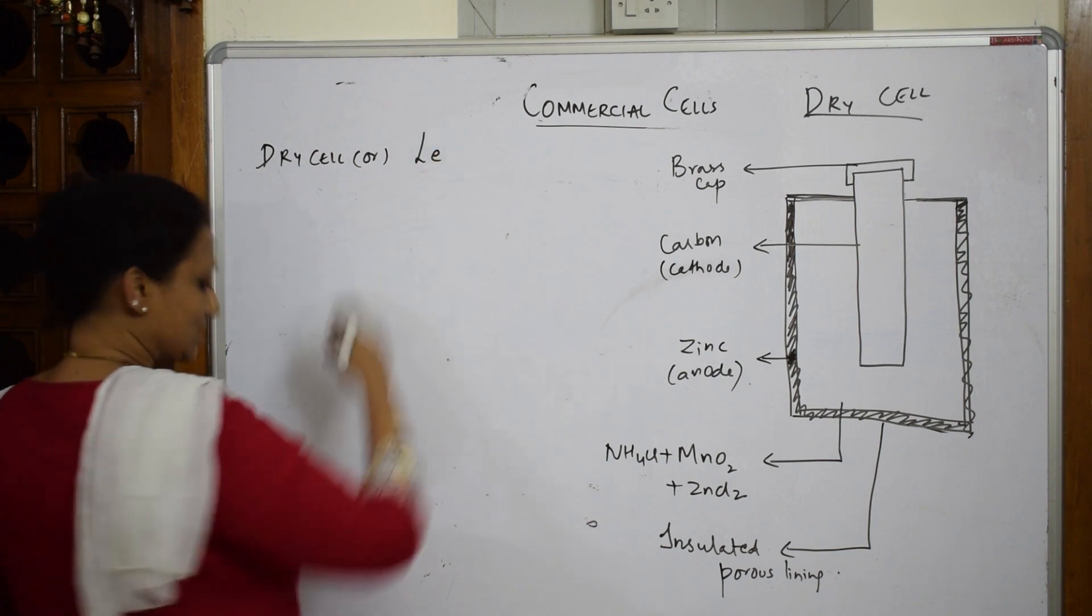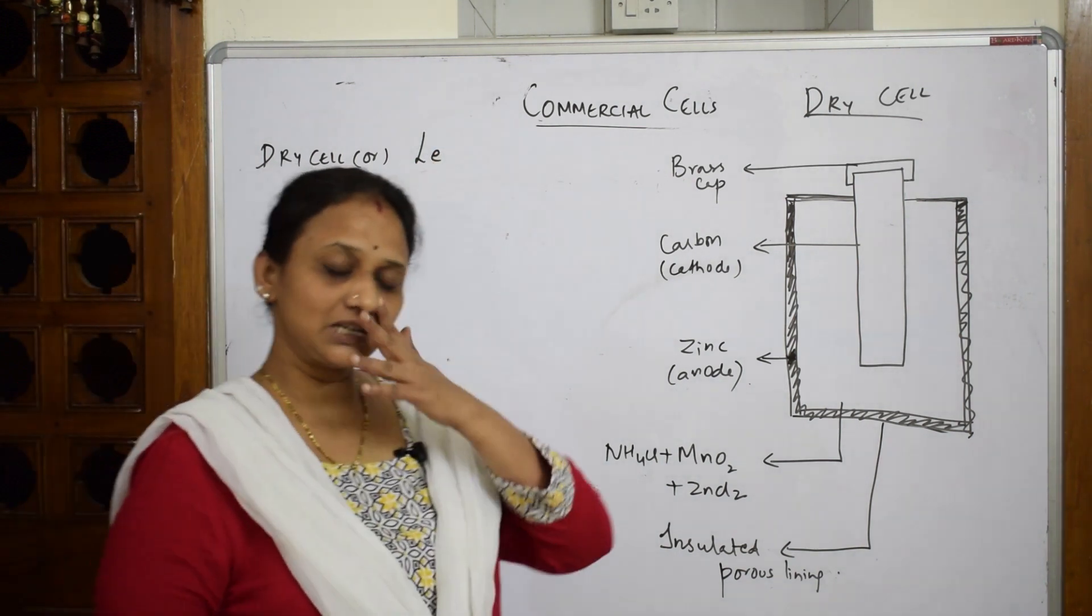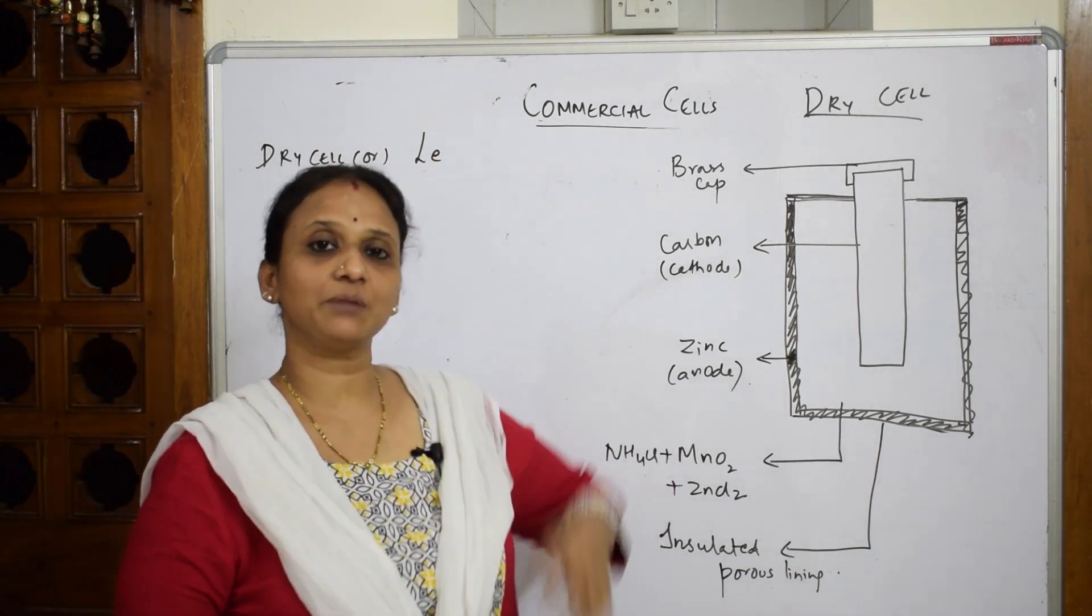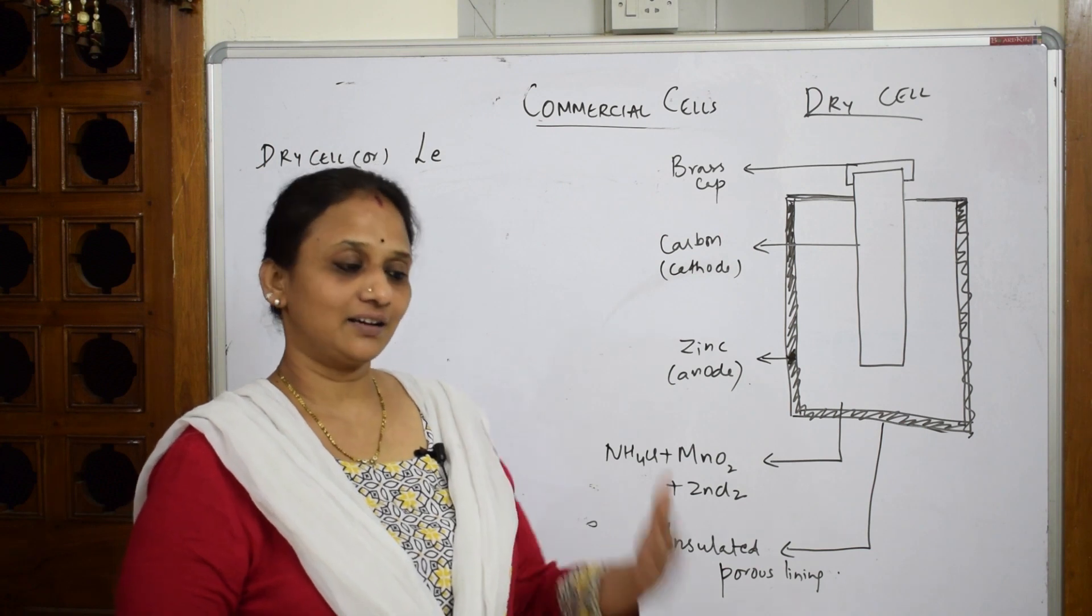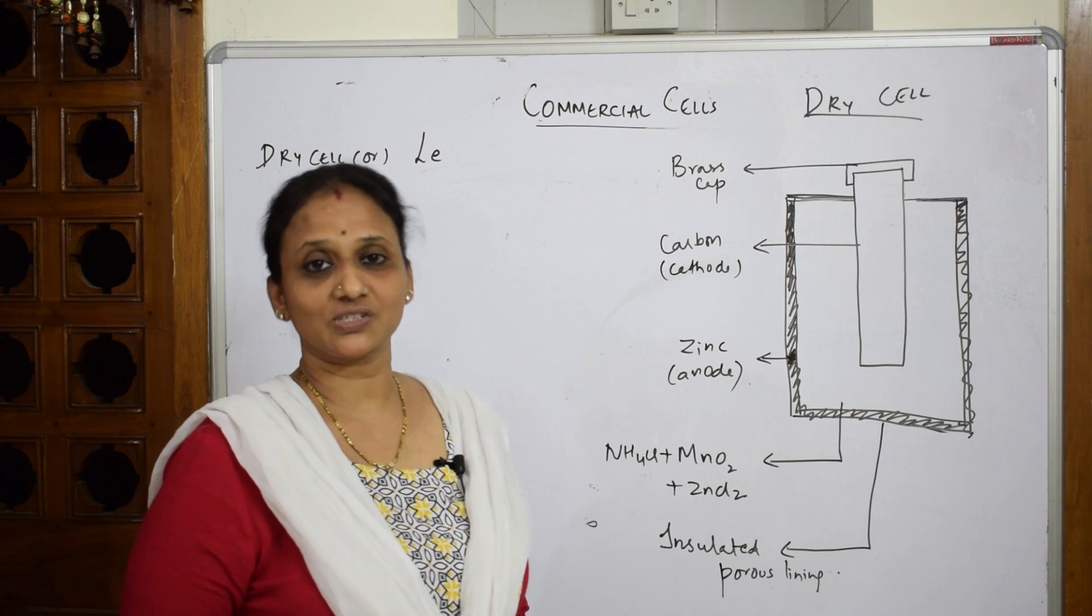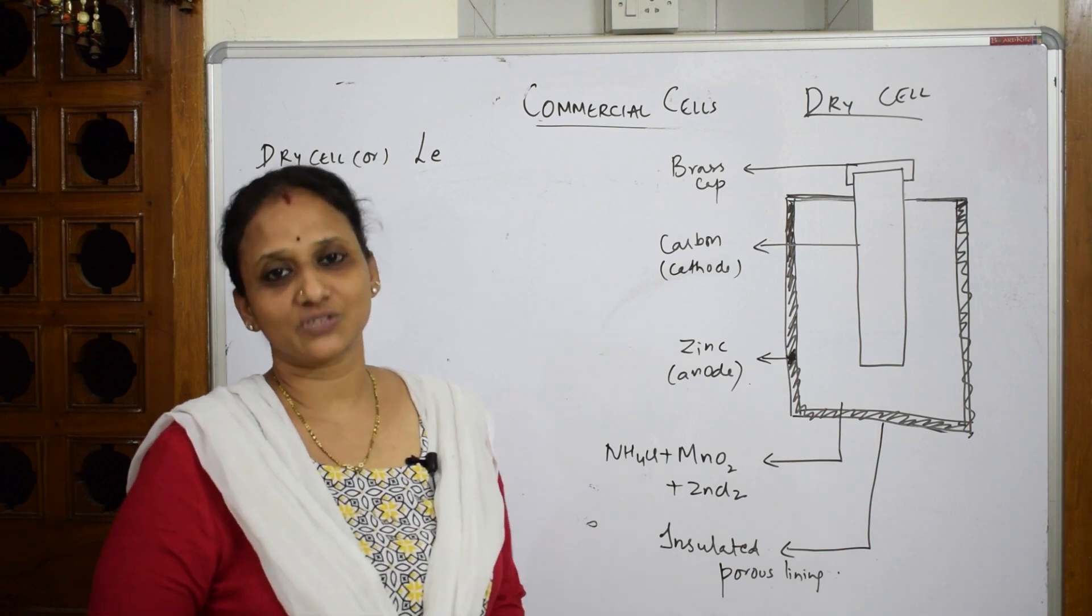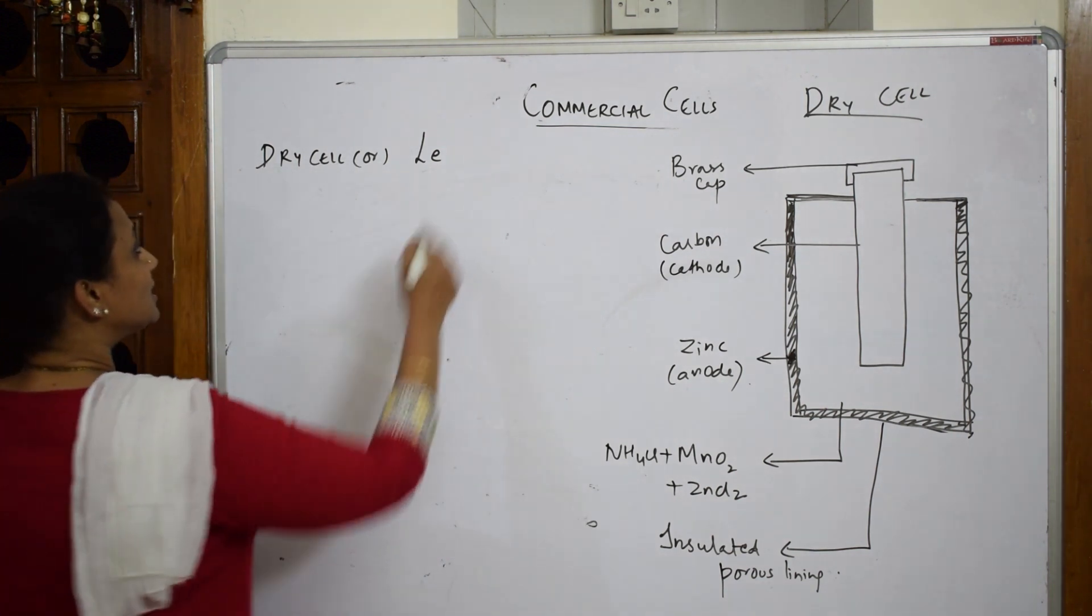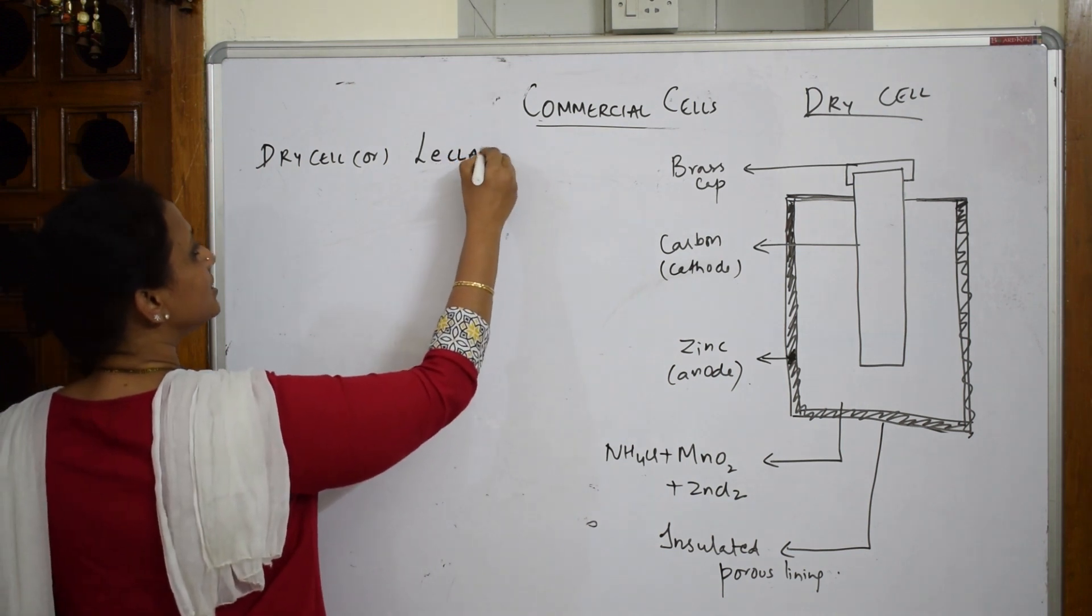Remember this was asked in last year's paper. I still remember one student came out and asked, 'Ma'am what is the dry cell other name?' It's called Leclanché cell. That student got 99 in chemistry. This is the form of dry cell, called Leclanché cell.